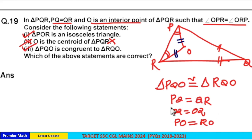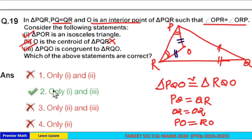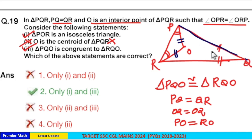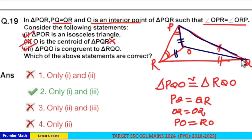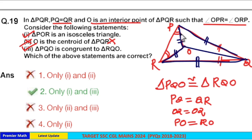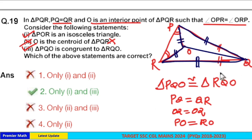Statements one and three are correct; statement two is wrong. Triangle PQO is congruent to triangle RQO because two sides are equal, one side is common, and the third side is also equal — all three sides are equal by SSS congruence.